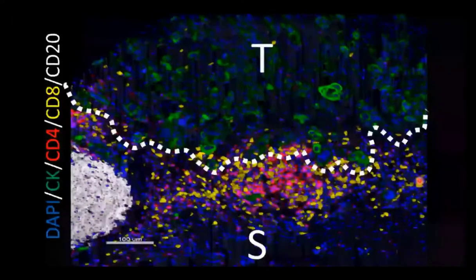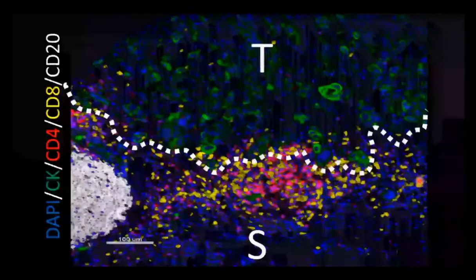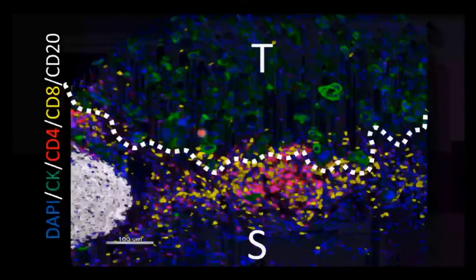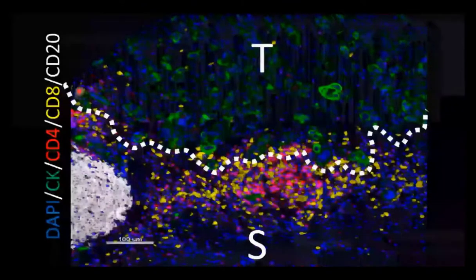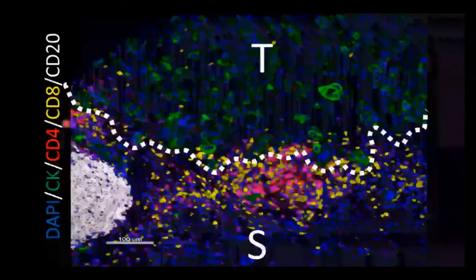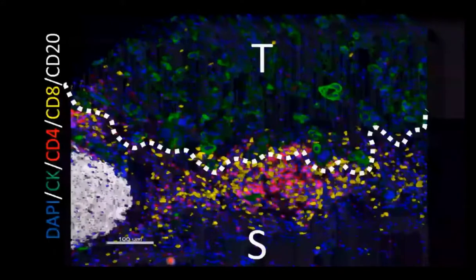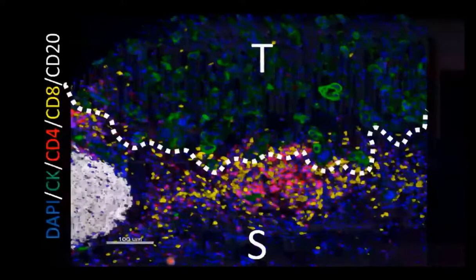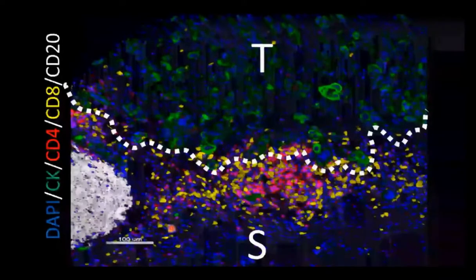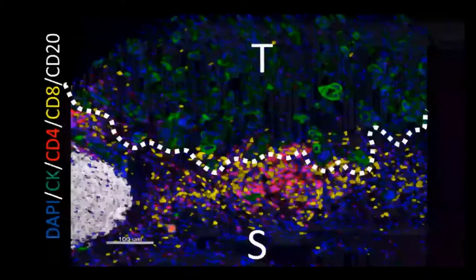In addition to looking at tumor cell expression of targets, we started interrogating the tumor microenvironment. This is an example of a multiplex immunofluorescence panel where we were able to look at tumor cells with green cytokeratin, and multiple tumor infiltrating lymphocyte subsets: CD4 in red staining helper T-cells, CD8 in yellow staining cytotoxic T-cells, and CD20, a B-cell marker, in white. We can not only spatially resolve the contexture of the tumor but also quantitatively count the signal for each marker and study the association of those metrics relative to clinical outcomes.